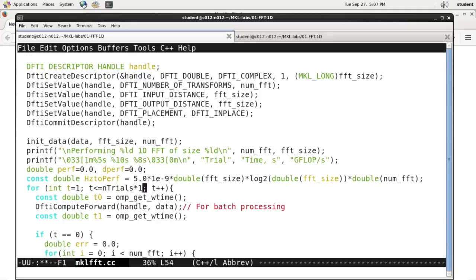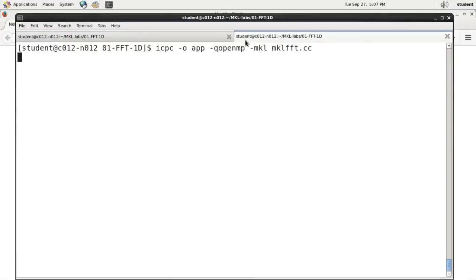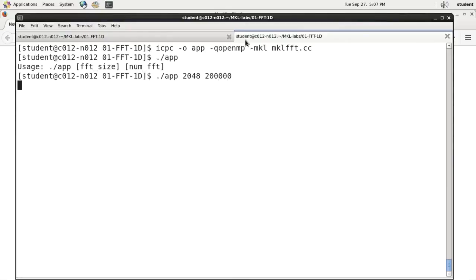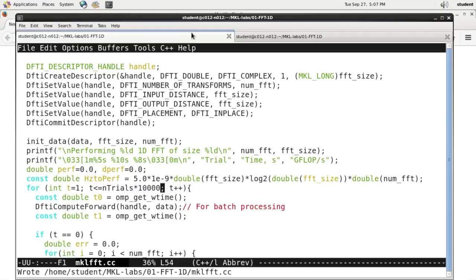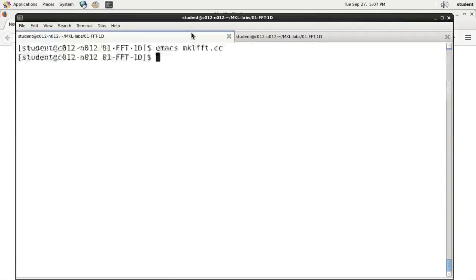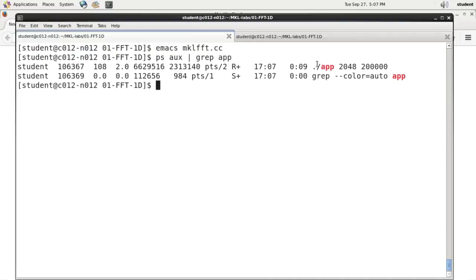To prove this to you, I will make my calculation run slightly longer. Let's recompile, let's rerun. And while it is running, I will make a note of the process ID. And the process ID seems to be 106367.